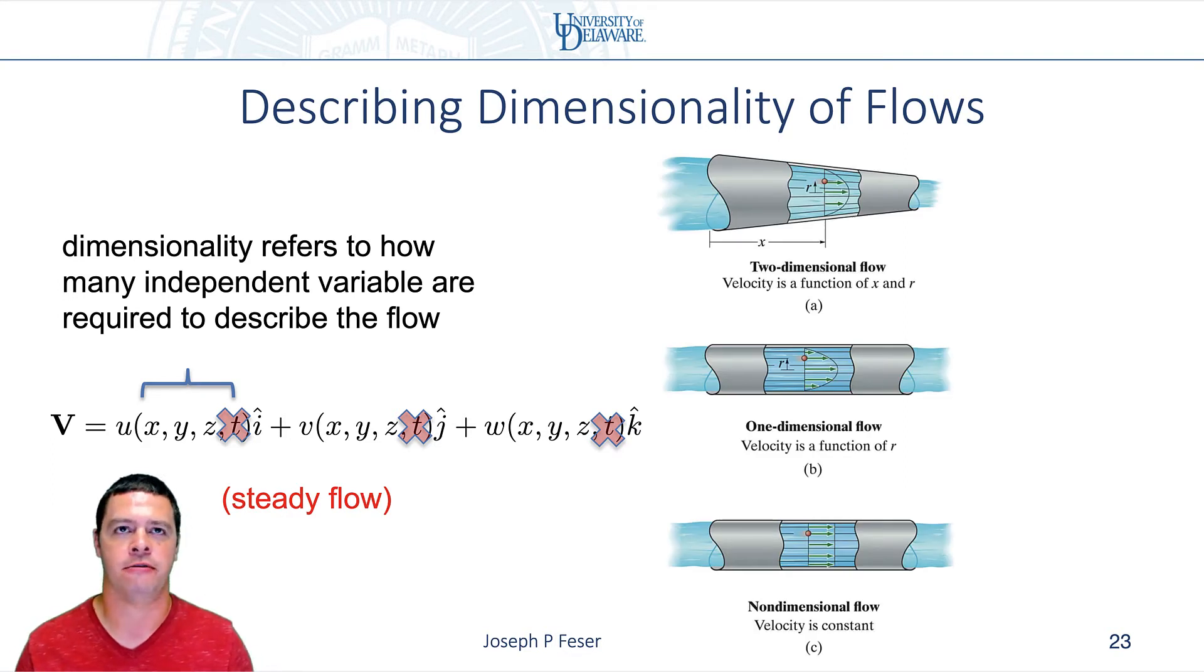But often when we have flows, we'll still have simple spatial situations. So for example, two-dimensional flows are one in which, instead of x, y, z, maybe I actually only need two coordinates to describe what the flow is like.